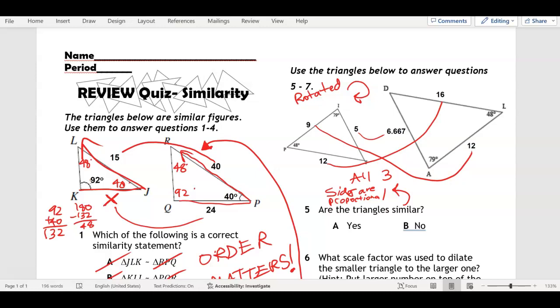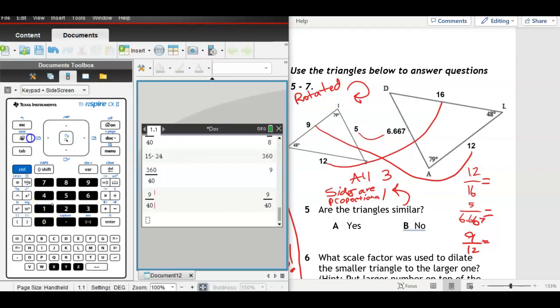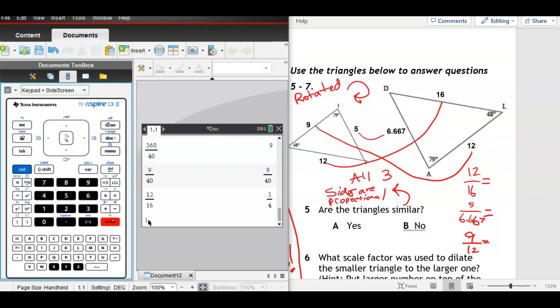Let's make these fractions: 12 over 16, 5 over 6.667, and then 9 over 12. What do these three equal?